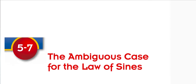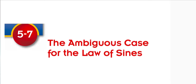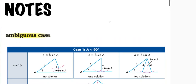Hi Precalculus. Here we are looking at the ambiguous case for the law of sines — we are in section 5-7. Something we didn't see in the last section when we were talking about the law of sines is that there can be times when the law of sines doesn't actually yield one concise answer. That's what's known as the ambiguous case. Different things can happen depending on the orientation or the type of triangle that we're working with.